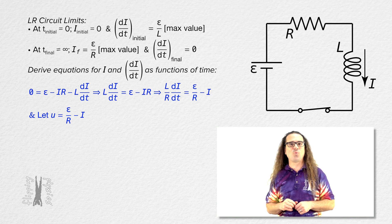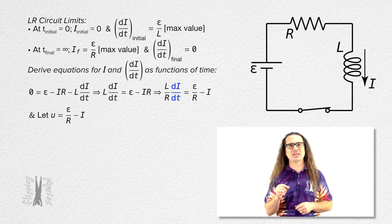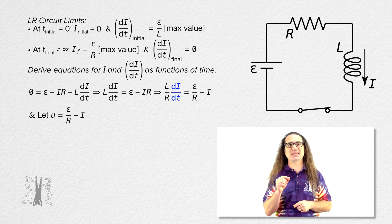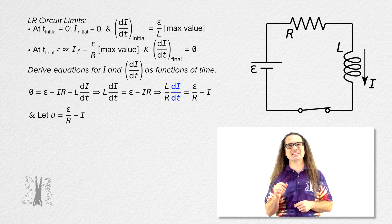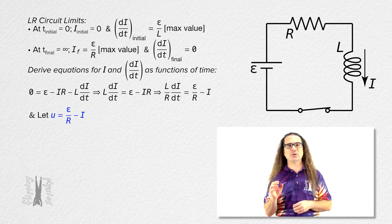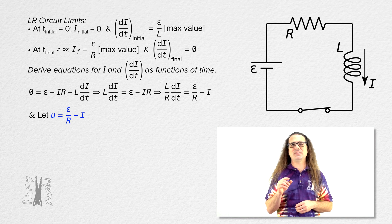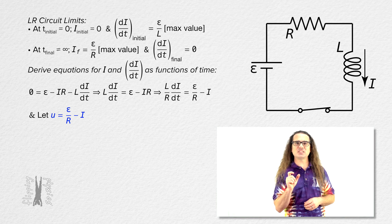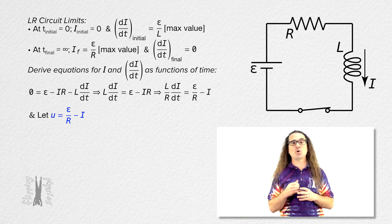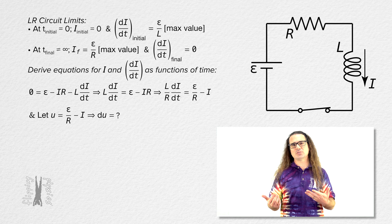Now, realize we have the derivative of current with respect to time in our equations. That means we need to be identifying infinitesimally small changes in variables in these equations. Looking at the equation u equals emf divided by resistance minus current, if we identify the infinitesimally small change in variable u, or du — what is du equal to?